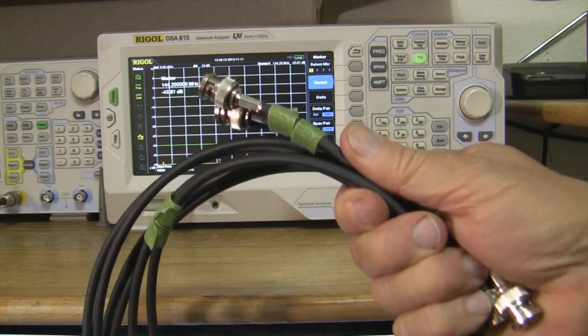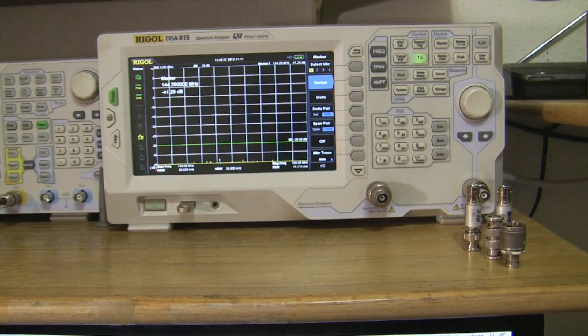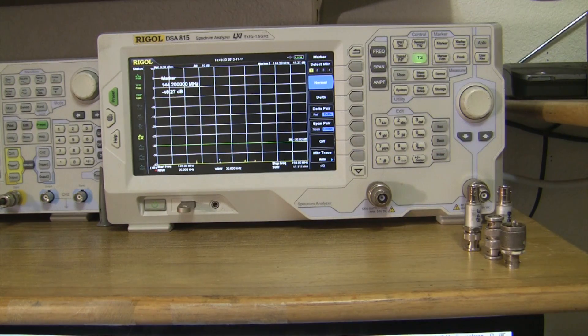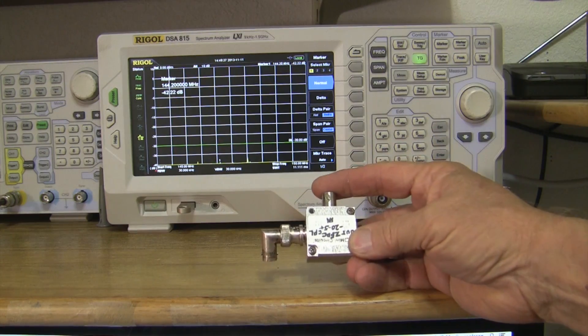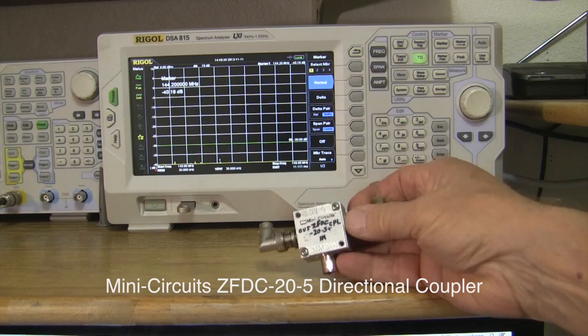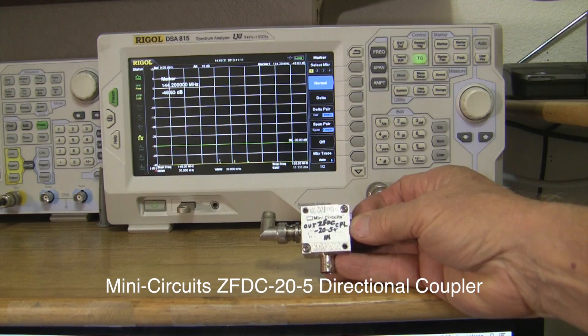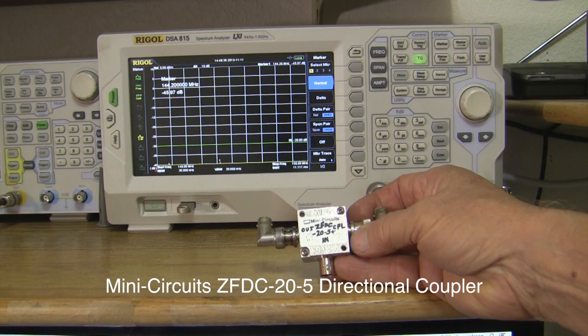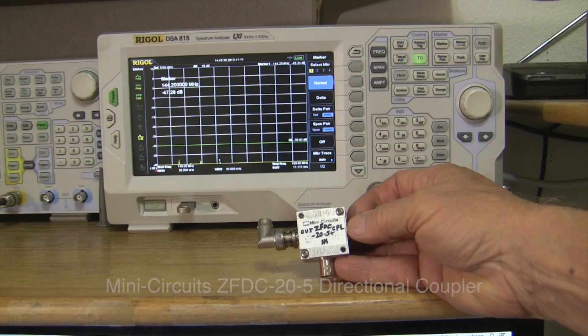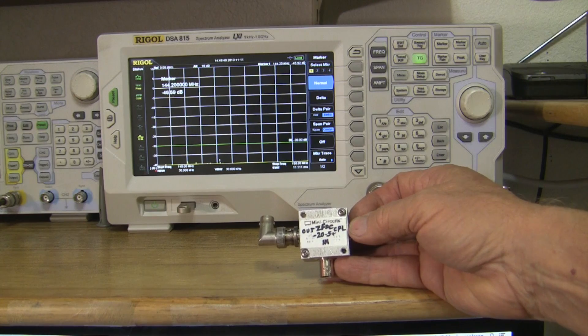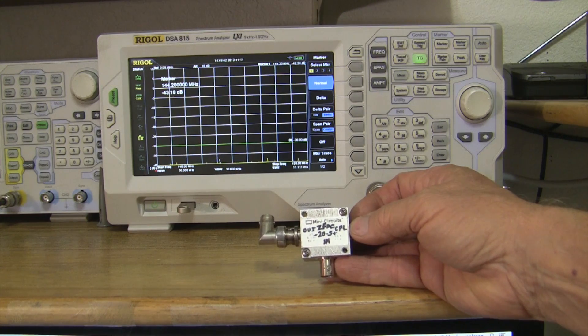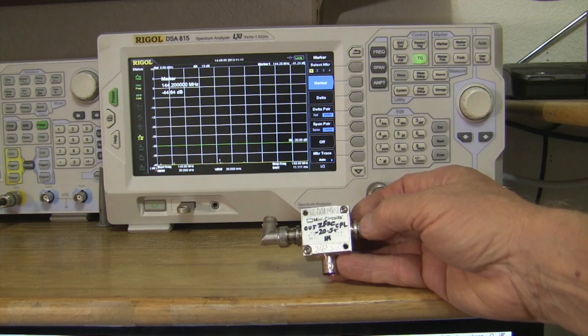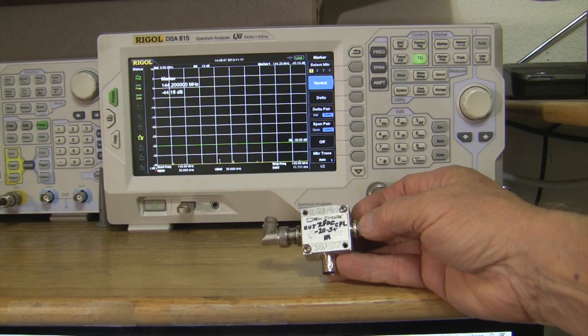And we're going to use it with our ZFDC directional coupler here. I guess I put it this way so you can read it. And this has the right angle connectors on it so that the cable goes away from the antenna when you connect it to the antenna. The output side will go to the tracking generator. The coupler will go to the spectrum analyzer input.